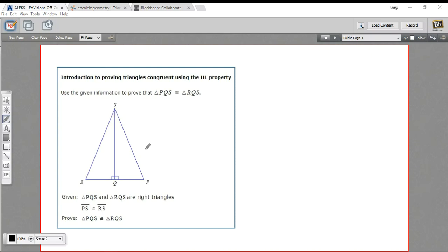In this problem, we need to write a proof to show that these two right triangles are congruent. And we're going to use a new property called the HL property. And that stands for hypotenuse and leg.